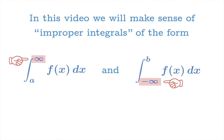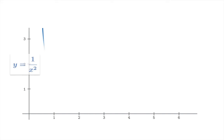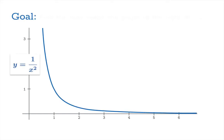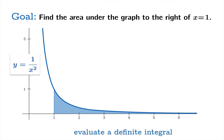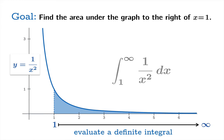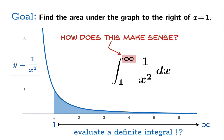Let's start by looking at a concrete example. Suppose we have the function 1 over x squared and our goal is to find the area under the graph to the right of x equals 1. So we have this region here that sort of runs off to infinity. Usually we'd evaluate a definite integral to find a signed area under a curve, but we seem to be integrating from 1 to infinity — so we'd naively write down the integral from 1 to infinity. But how does this make sense? What are we really trying to accomplish here?